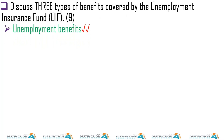Discuss three types of benefits covered by Unemployment Insurance Fund. We mentioned these earlier — we have unemployment benefits, maternity benefits, adoption benefits, and dependency benefits. For this nine-mark question, you get two marks for knowing each benefit name, so you can already have six marks just for knowing three of the names.